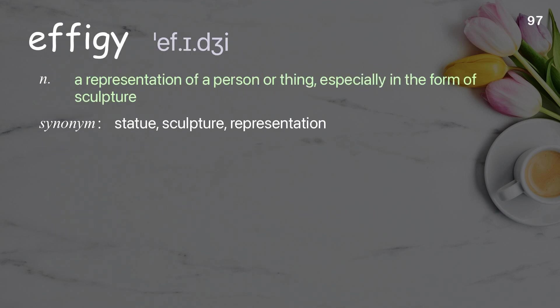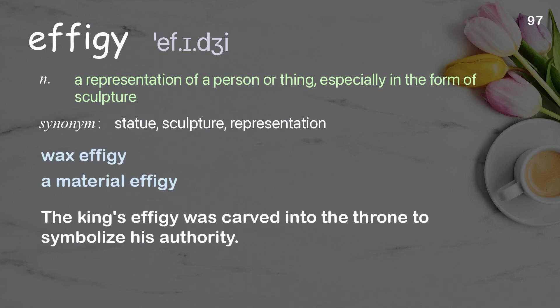Effigy — a representation of a person or thing, especially in the form of sculpture. Examples: wax effigy, a material effigy. The king's effigy was carved into the throne to symbolize his authority.